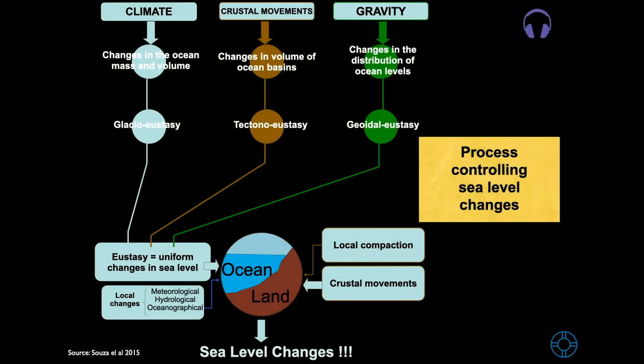We are still talking about processes controlling sea level changes. We can discuss them using three groups. The first one is climate, the second one is crustal movements, and the third one is gravity. Associated with climate, we have shifts in the ocean mass and volume due to glacio-eustasy. Glacio-eustasy refers to changes of sea level related to the growth and decay of the mass of glaciers at the Earth's surface. The mass of glaciers reacts to the Earth's temperature oscillations.